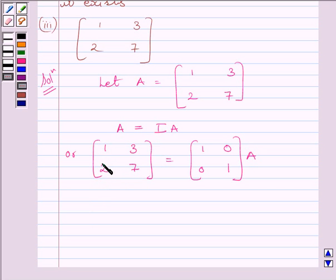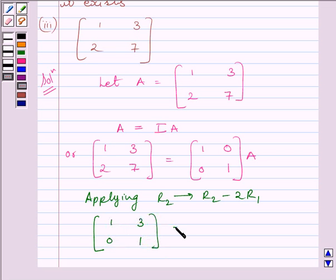we will apply on R2 the row operation R2 minus 2R1. So, we can write, applying on R2 row operation R2 minus 2R1, we get matrix [1, 3; 0, 1] is equal to matrix [1, 0; -2, 1] multiplied by A.